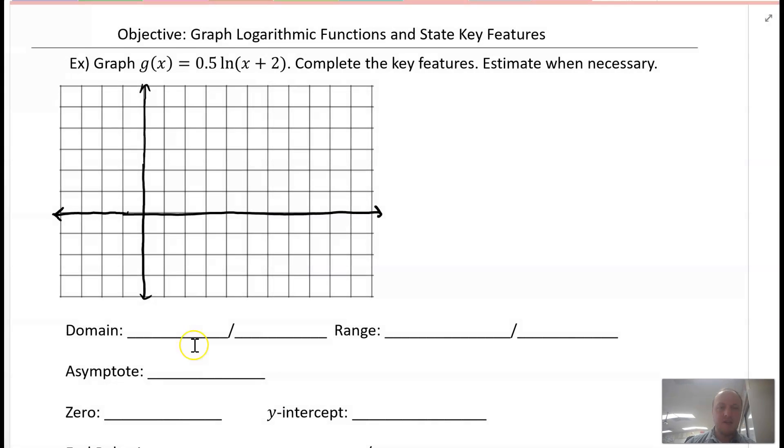Okay, so here is the first example dealing with graphing a natural logarithm. Our function is g of x equals 0.5 natural log of x plus 2. What I want to do is go ahead and use red to plot the parent function points for a natural log.